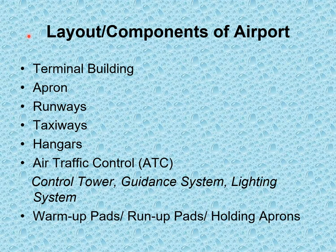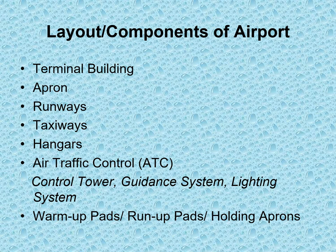Components of an airport include: terminal building, aprons, runways, taxiways, hangars, and air traffic control (ATC) — which comprises the control tower, guidance system, lighting system, and warm-up pads (also known as run-up pads or holding aprons).